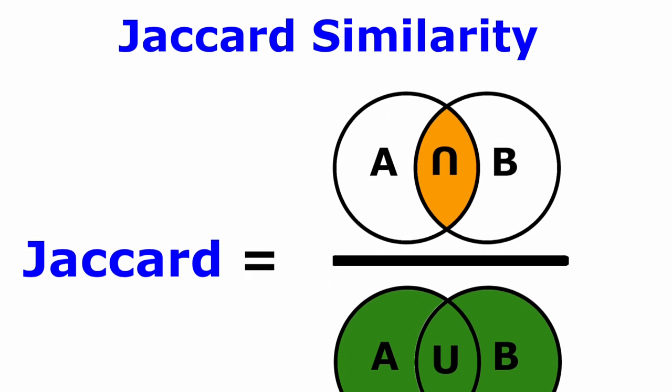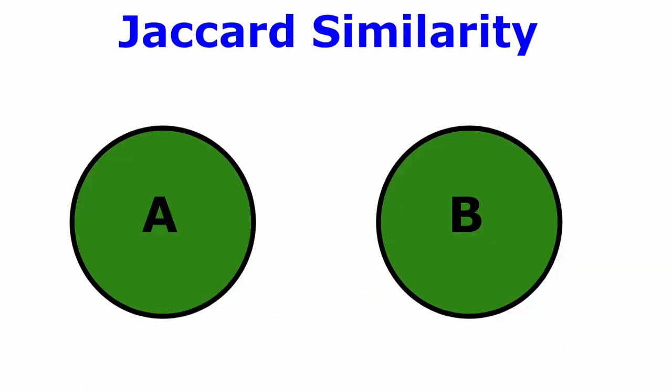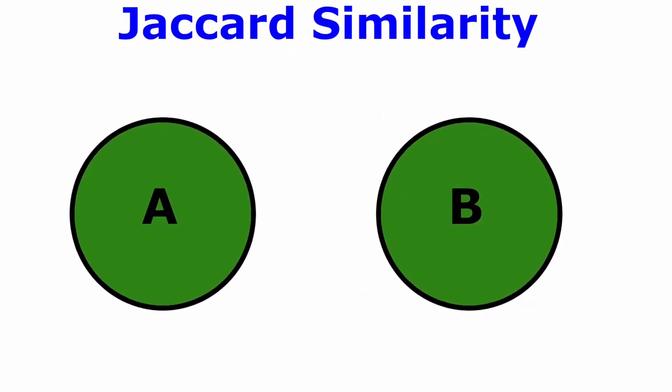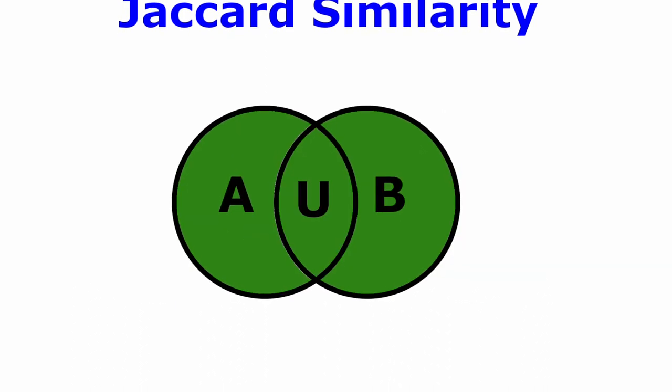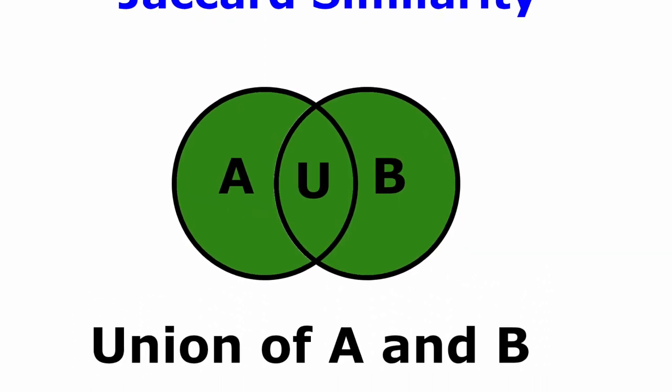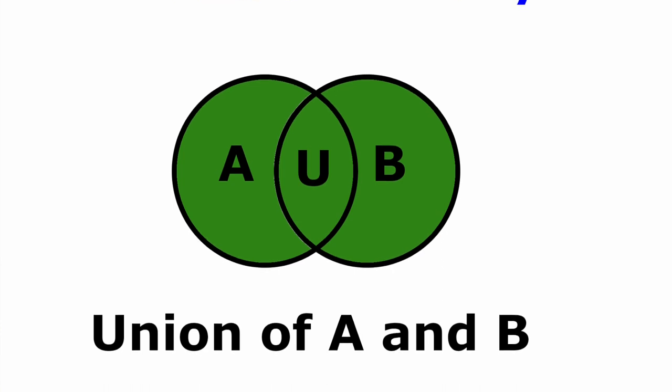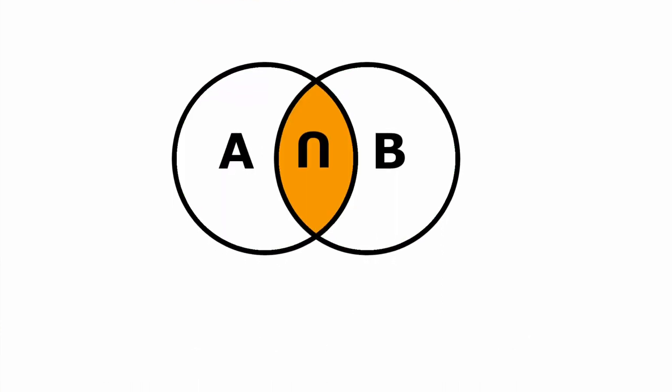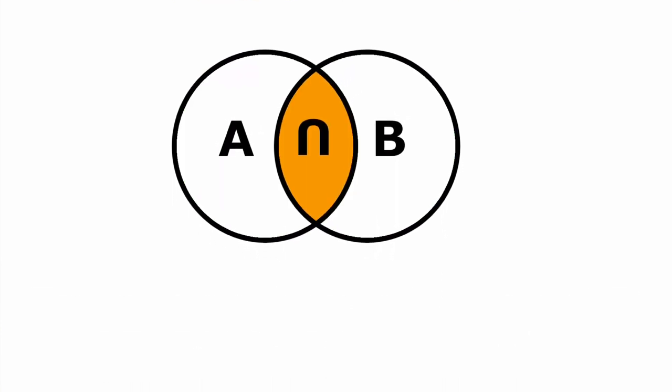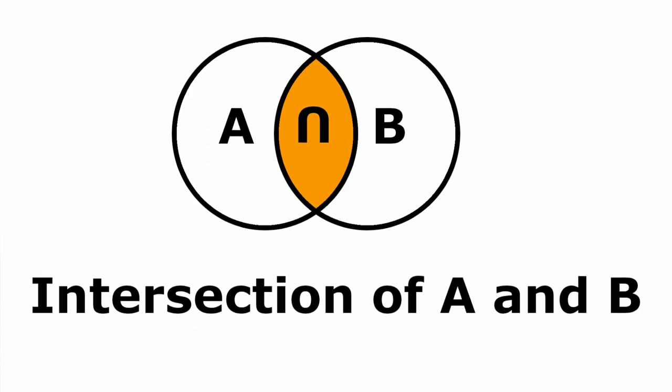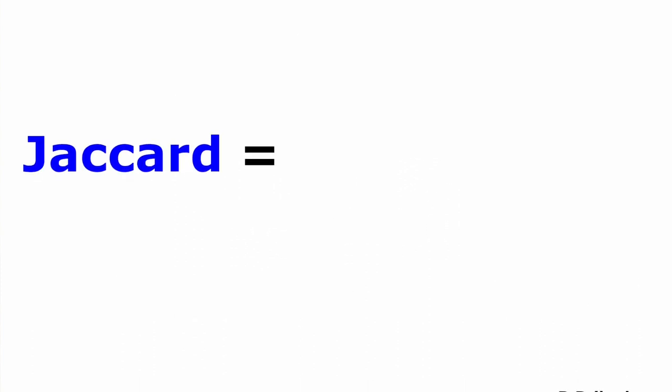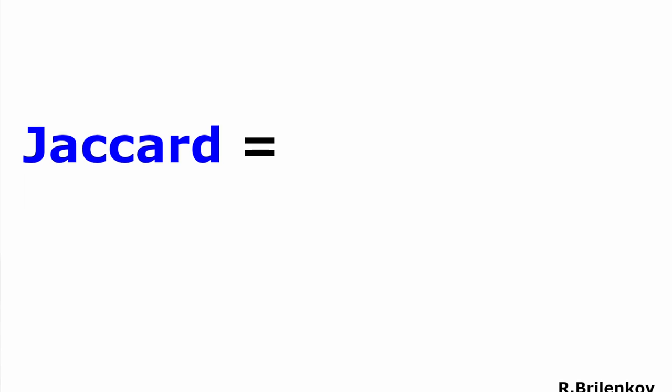Finally, the Jaccard score would be, in this case, intersection divided by the union, 1 over 7, which is 0.14. So this score is quite poor, but it makes sense, because these two lists had only one common element. No wonder that Jaccard index is so low. I hope this example clarifies the usage of such an index.